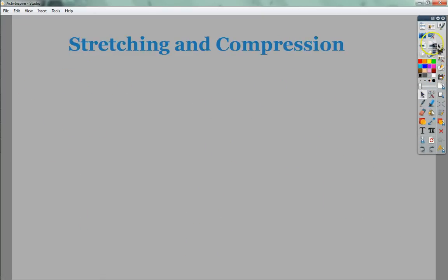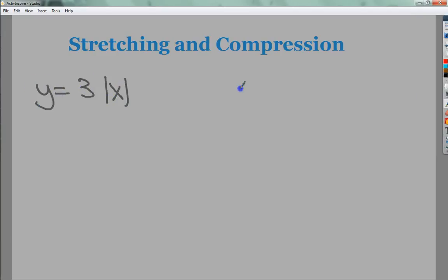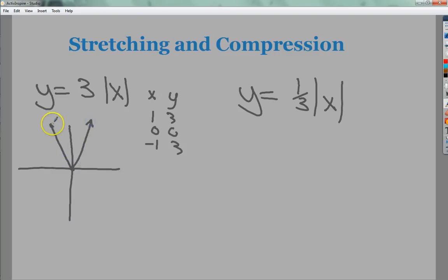For the next one, stretching and compression. Now when I have the compression versus stretching, it speaks to whatever the coefficient is in front of the absolute value. If I have y equals 3x, if I was doing a little table here, 0 is still 0. But if I plug in x of 1, I get a y value of 3. And if I plug in negative 1, I get 3. So what this looks like is it's in the same basic spot as the parent function, it's just a lot steeper. We're stretching it up.